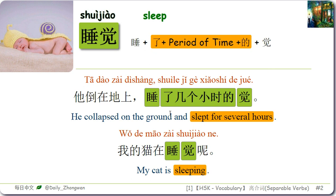睡了一小觉 means take a little nap. The second sentence: 我的猫在睡觉呢 — My cat is sleeping.